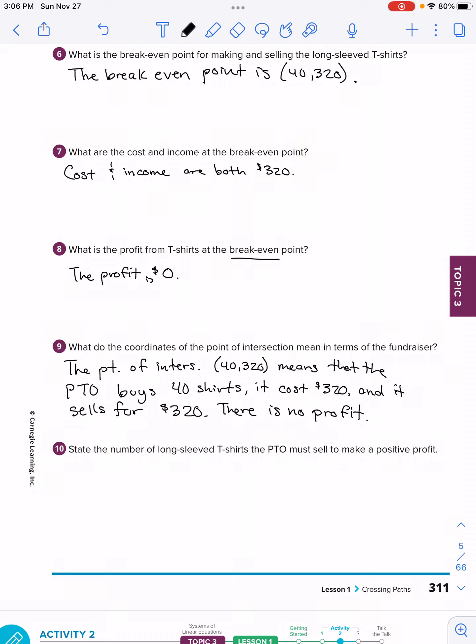Let's get to number 10. State the number of long sleeve t-shirts that PTO must sell to make a positive profit. They need to start making money. So if 40 t-shirts produces a profit of $0, then the PTO must sell anything above 40. We'll say the PTO must sell at least 41 t-shirts to make a positive profit. We can have a negative profit, a zero profit that's break-even, or in this case, a positive profit where we're now making money in this fundraiser. We'll call it there. We'll go into activity two and three on the next video.